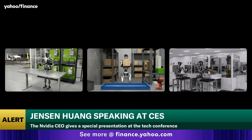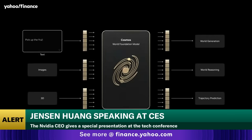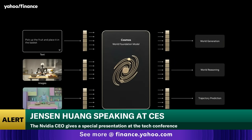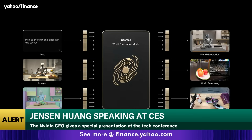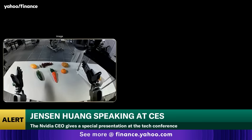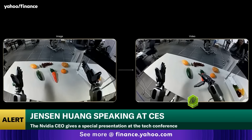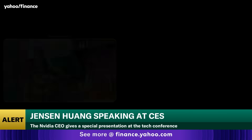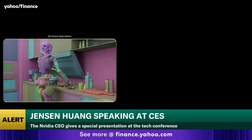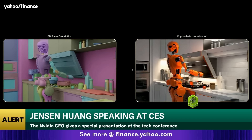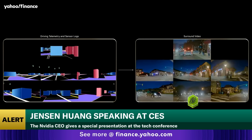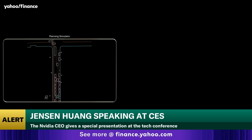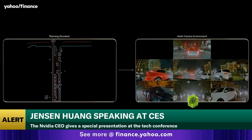Cosmos learned a unified representation of the world, able to align language, images, 3D, and action. It performs physical AI skills like generation, reasoning, and trajectory prediction. From a single image, Cosmos generates realistic video. From 3D scene descriptions, physically coherent motion. From driving telemetry and sensor logs, surround video. From planning simulators, multi-camera environments.